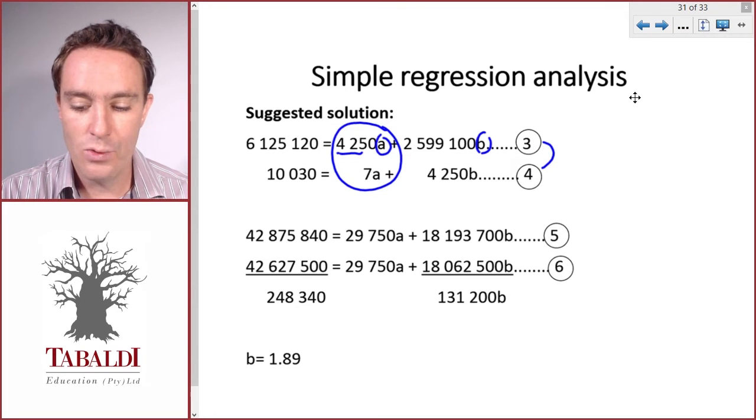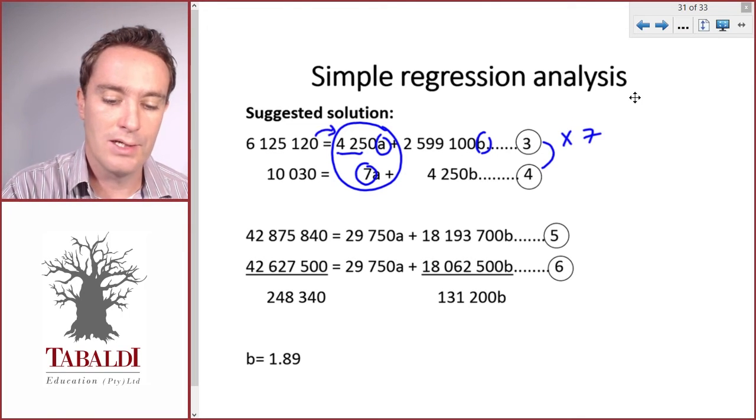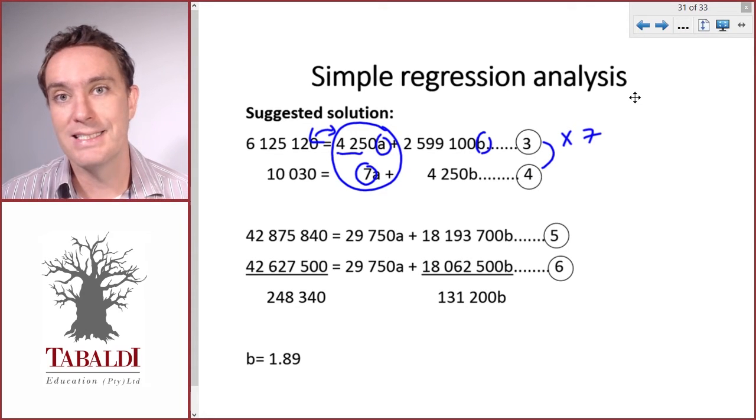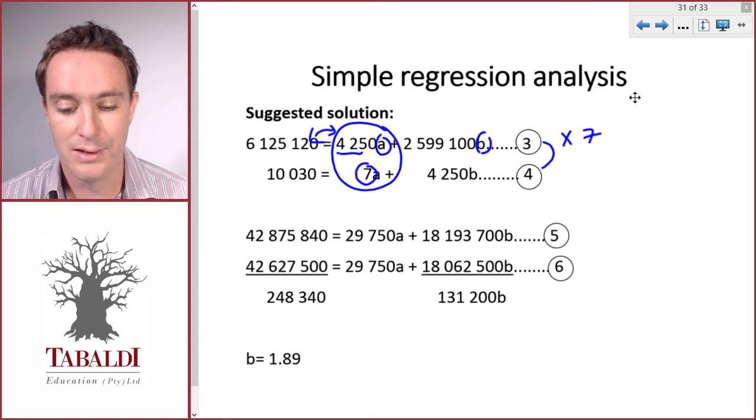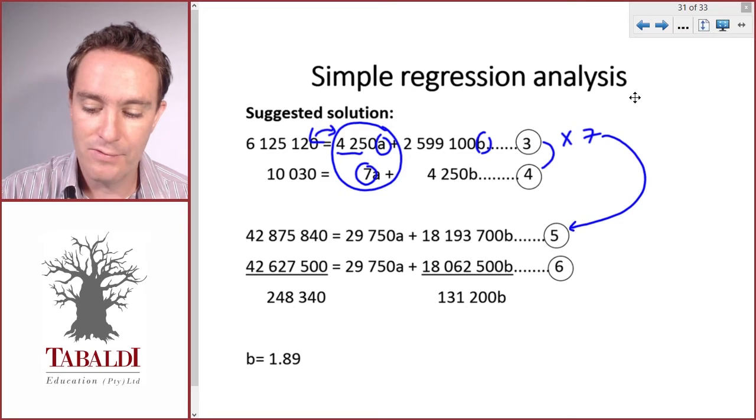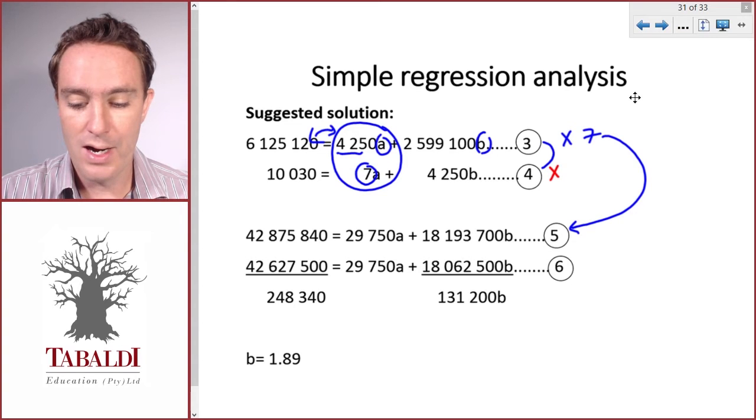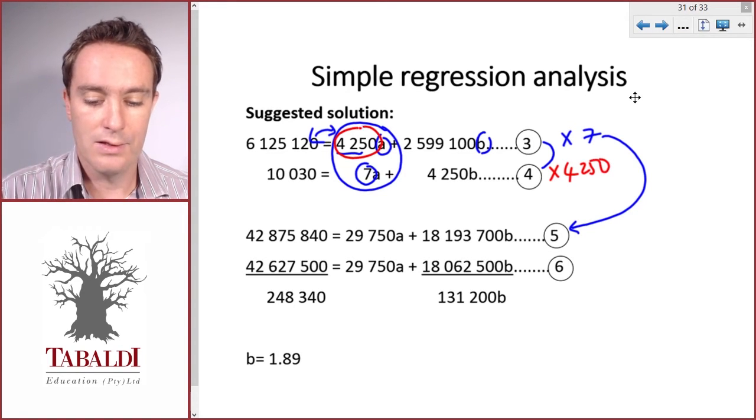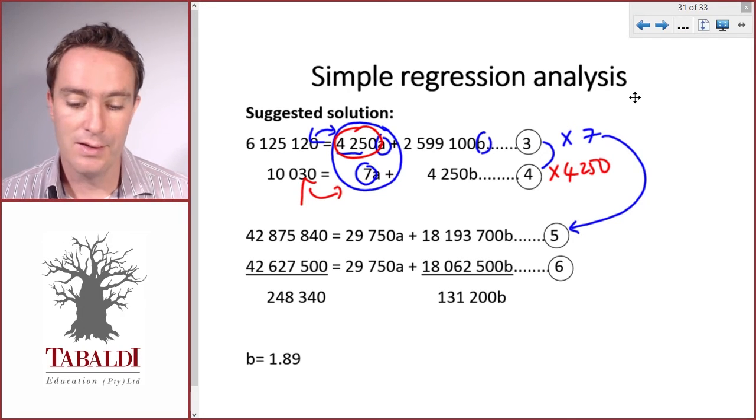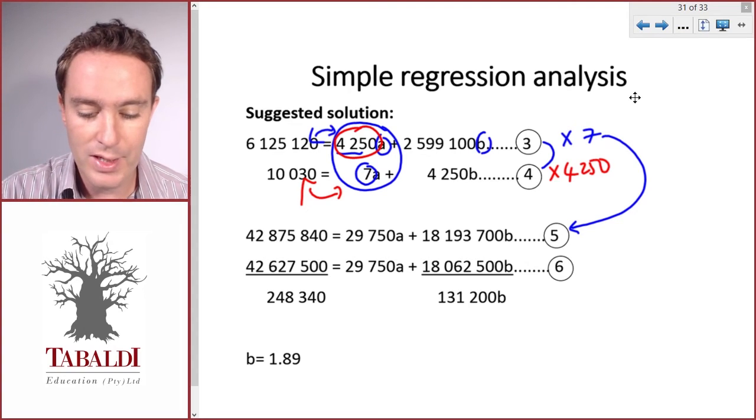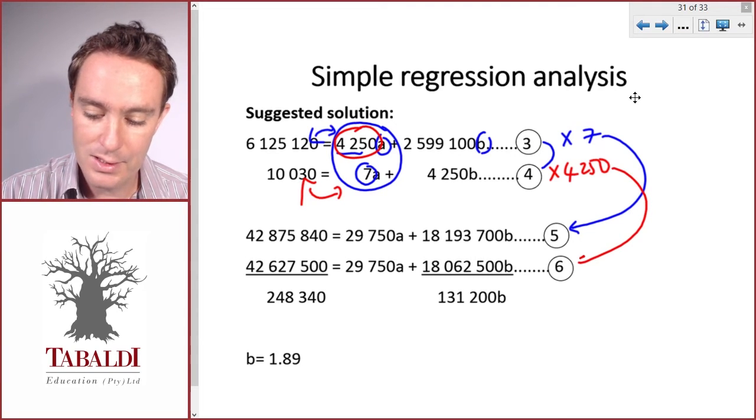Equation three we'll multiply by seven on both sides of the equal sign. Remember, if you multiply by the same value on either side of the equal sign, the formula does not change. You don't change it mathematically. That's what we did to get to equation five. Then we'll multiply equation four by 4250 on both sides of the equal sign. Again, we don't change the formula. The numbers do get bigger, but by multiplying on both sides of the equal sign, we don't change the formula. This becomes equation six then.